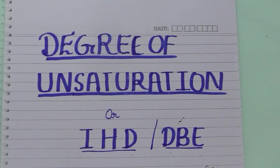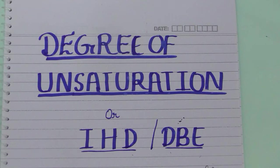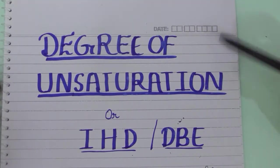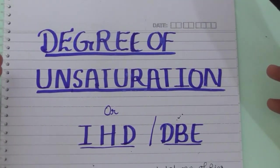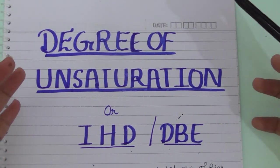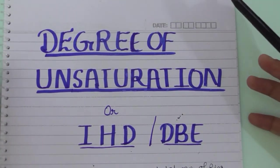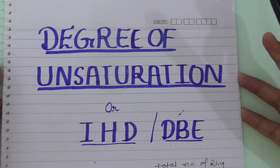Hello everyone, this is Smriti and you're watching me on Imagine Turds. Today's topic is degree of unsaturation, also called index of hydrogen deficiency or double bond equivalent. We have so many ways to determine the structure of any unknown organic compound, such as NMR spectroscopy or IR spectroscopy, which are the primary ways of determining molecular structure.